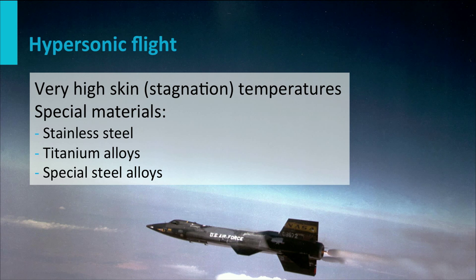The aircraft shown in this picture is the X-15. It is powered by a rocket engine. This engine brings the aircraft to speeds as high as 7274 km per hour, or a Mach number of 6.72. At that speed the skin temperature becomes so high, about 650 degrees Celsius, that common alloys are not applicable.